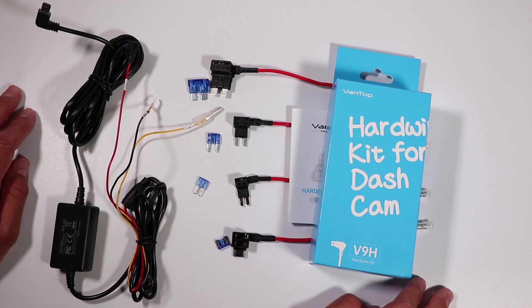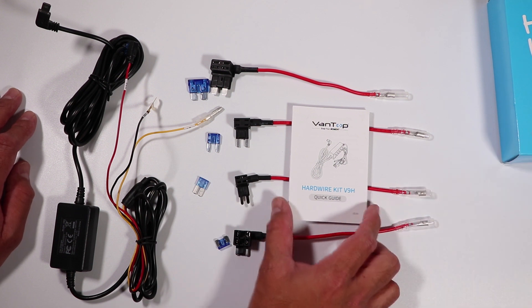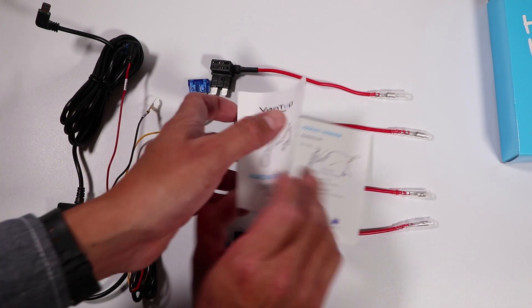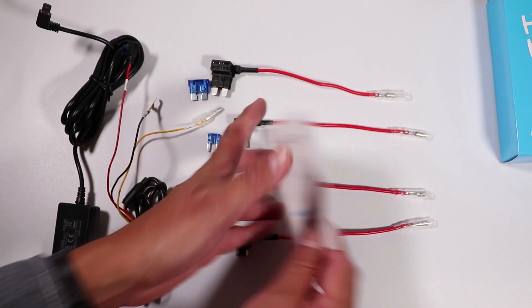So here are the contents of the V9H hardware kit. We get a nice little quick installation guide, and the guide has nice pictures and good pictorials and shows us where everything should be hooked up to.